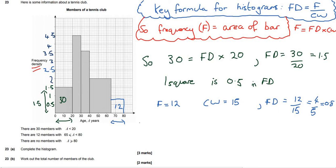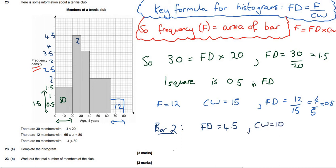Part B: work out the total number of members of the club. All we have to do is find the frequency of these three remaining bars. Let's call it bar 2, which is this one. Its frequency density is 4.5 and its class width is 10. We know that frequency equals these two multiplied, so frequency equals 45.